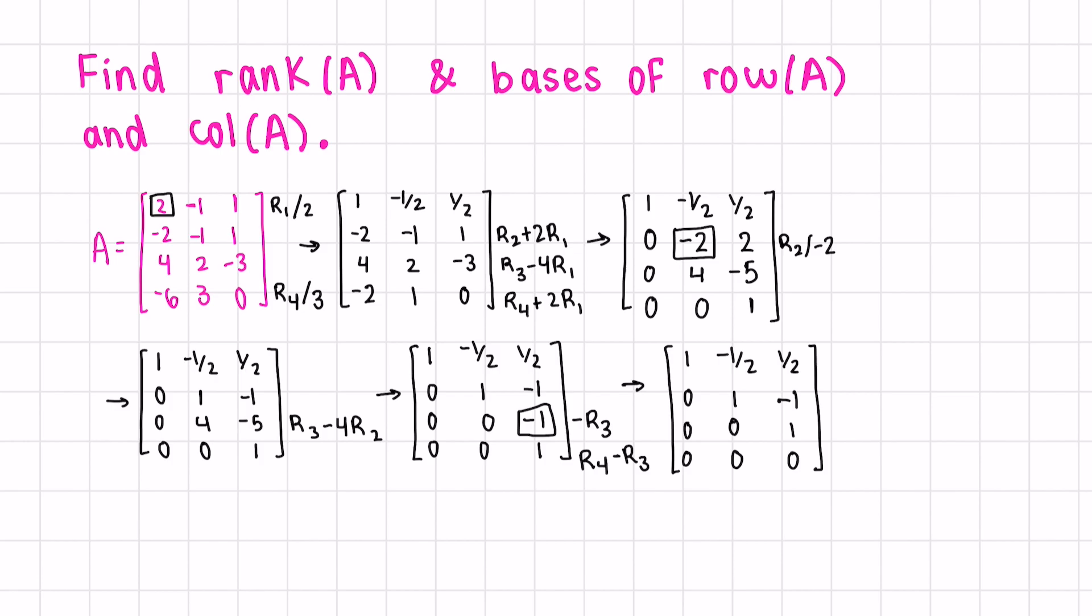Now that our matrix is in row echelon form, we could have gone further and sought zeros above each of the leading ones. But in this case, it's not necessary. We see that we have three leading ones, so our rank is 3. This also means that the dimension of our row space and the dimension of our column space should be 3.